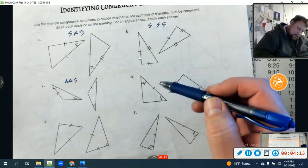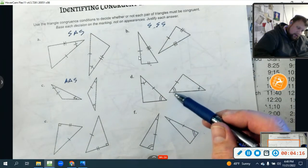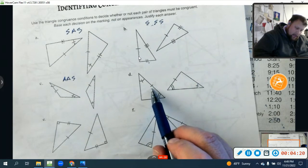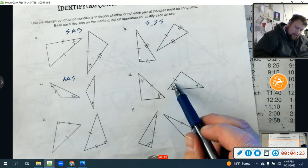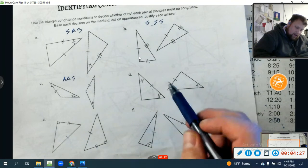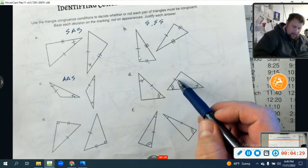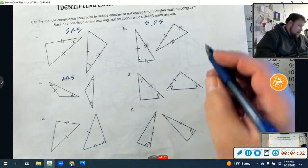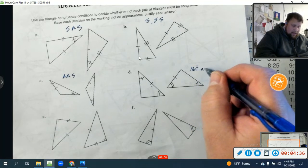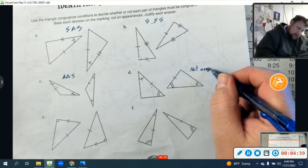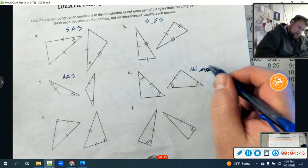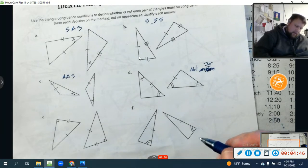Now, this one, I have an angle congruent to an angle. I have the included side congruent. Wait, that's the non-included side. So they have a congruent angle, two congruent angles, but one's an included side congruent to a non-included side. I can't say these are equal. I've got to say not necessarily congruent. We're just going to say not congruent. We don't know. Not congruent.